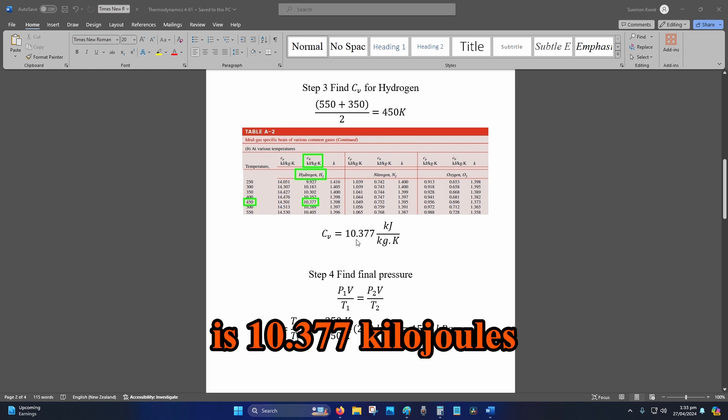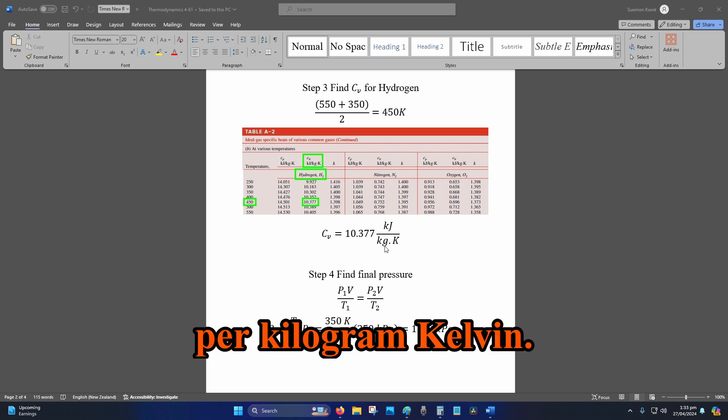Your CV is 10.377 kJ per kilogram Kelvin.